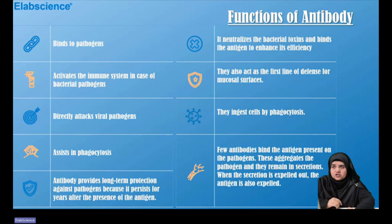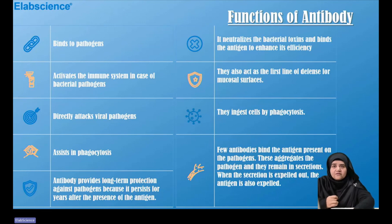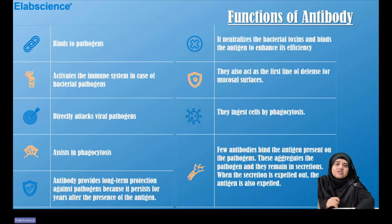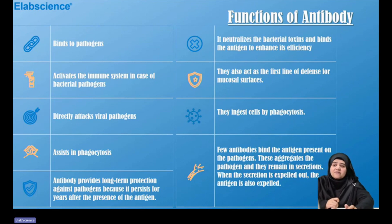The most important function of an antibody is that it binds to antigens on pathogens. It also neutralizes bacterial toxins and binds antigen to enhance immune efficiency. It activates the immune system against bacterial pathogens, and antibodies act as the first line of defense for all mucosal surfaces. They also directly attack viral pathogens, such as COVID-19, and assist in the process of phagocytosis.